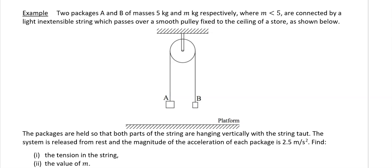For the next example: two packages A and B of mass 5 kilograms and M kilograms respectively, where M is less than 5, are connected by a light inextensible string which passes over a smooth pulley fixed to the ceiling. The packages are held with both parts of the string hanging vertically with the string taut — taut means the string is pulled tight, not slack, so there is tension in it. The system is released from rest, and the magnitude of the acceleration of each package is 2.5 meters per second squared.